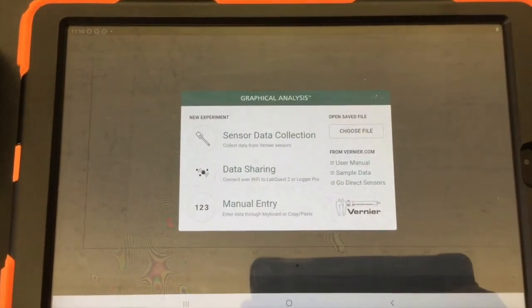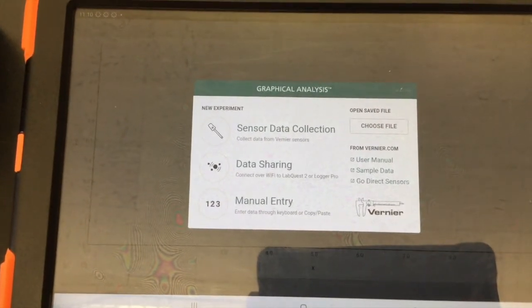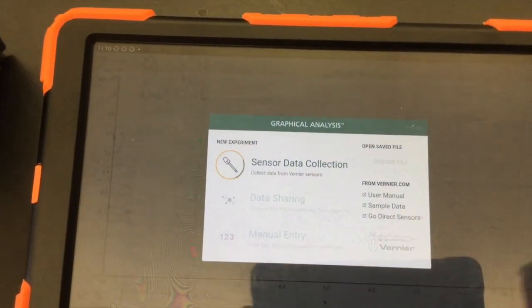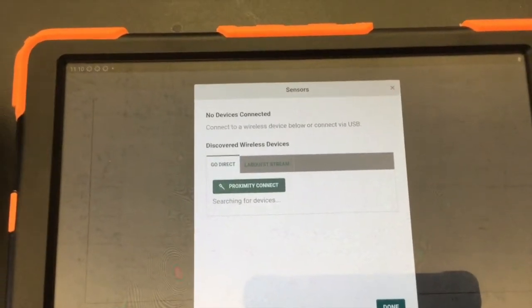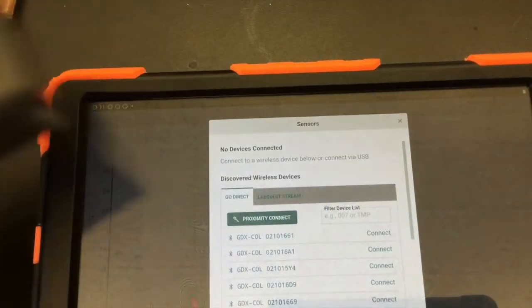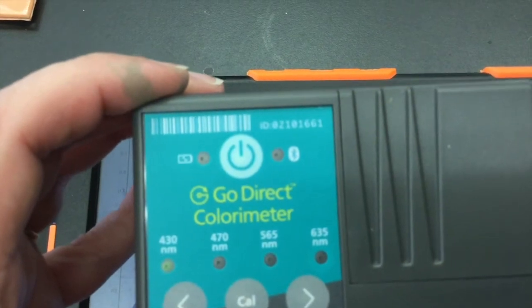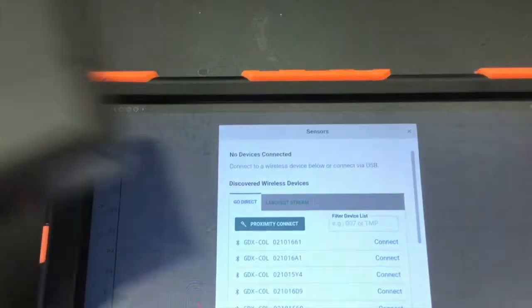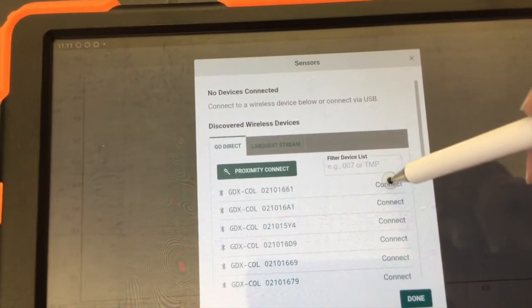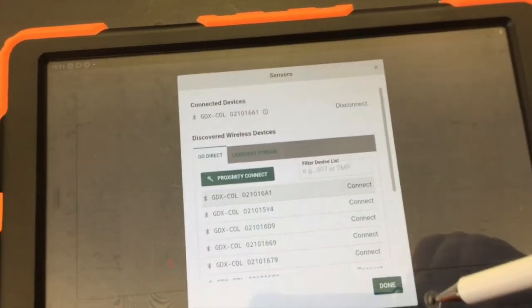When you open graphical analysis you should see a screen like this that asks you how you want to collect your data. We are going to use sensor data collection. You need to make sure that the colorimeter you are using is turned on so there is a power button right here and the light should be blinking. Right above the blinking light there is a number you are going to match that ID number to what is on your screen. In my case it is this first one. I am going to connect it. It should appear at the top here. And then I say done.